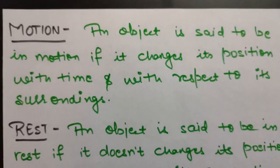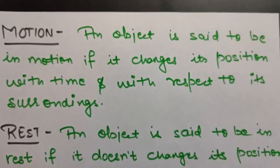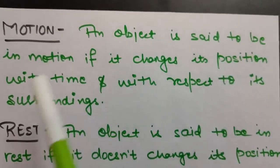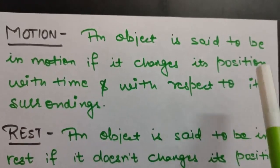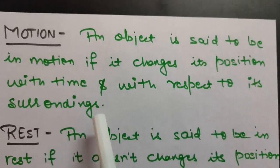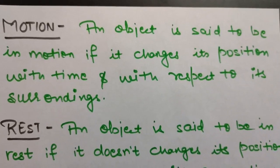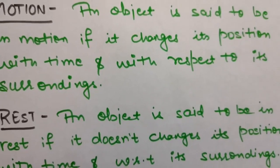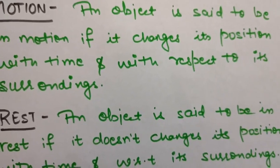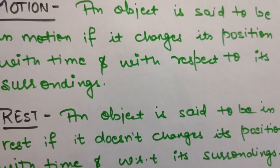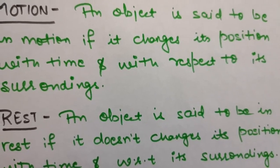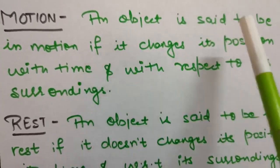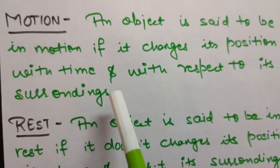Now let us start with Chapter 3. The first topic is motion. How do we define motion? An object is said to be in motion if it changes its position with time and with respect to its surroundings. For example, if we take a bird flying in the sky — you are on the ground and you see that bird changing its position with time and its surroundings. So that bird is said to be in motion.